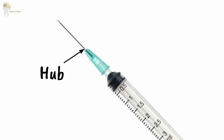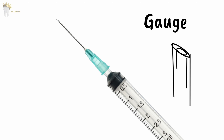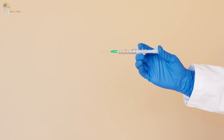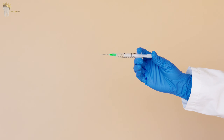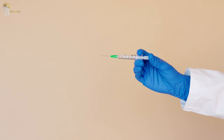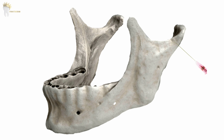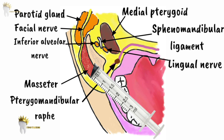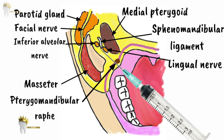The needle gauge represents the diameter of the needle lumen; for this block a 25 or 27 gauge needle is used. As the needle is advanced, a few drops of local anesthetic can be deposited to keep the patient comfortable. Once bone is gently contacted, the needle tip will be slightly superior to the mandibular foramen. The needle is then withdrawn about 1 mm to avoid subperiosteal injection, and aspiration is performed. After the first aspiration, the syringe is rotated 45 degrees and aspiration is done again.